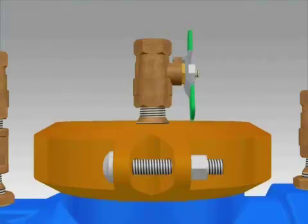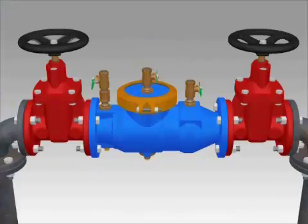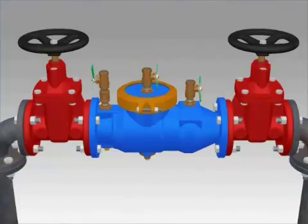Close the number 3 test cock. Open your inlet valve slowly to pressurize the assembly. Inspect for any leaks. Open and then close test cocks to bleed air from the assembly.